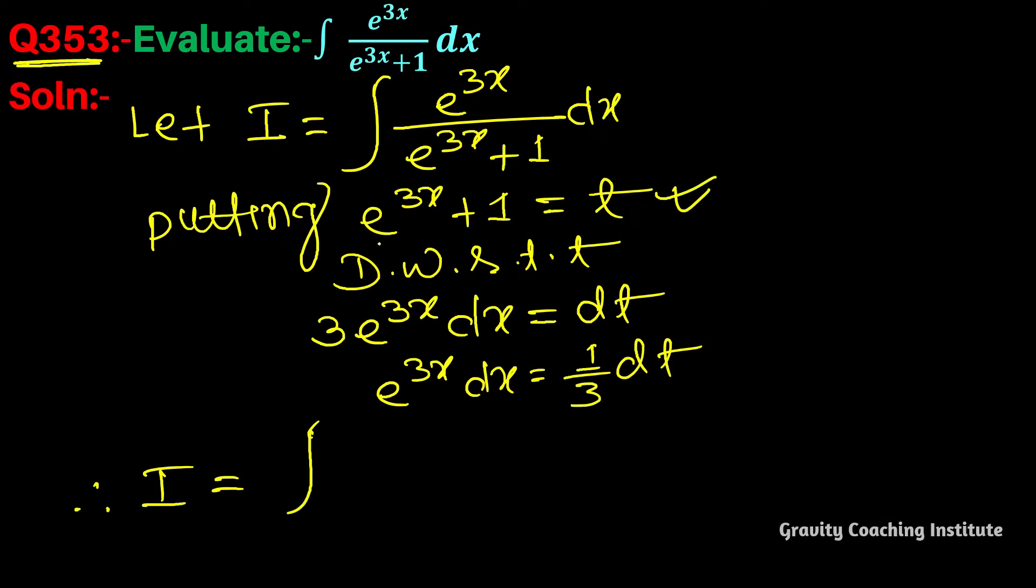I equals integration 1 by t times 1 by 3 dt. Taking 1 by 3 constant outside the integration, we get 1 by 3 log mod t plus c.